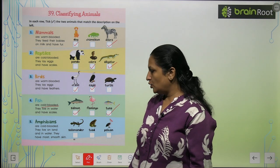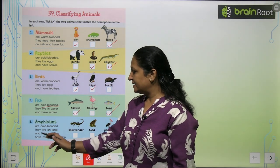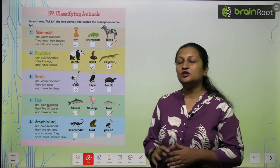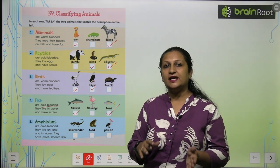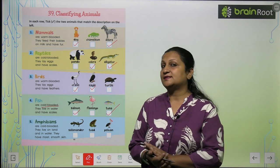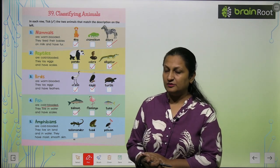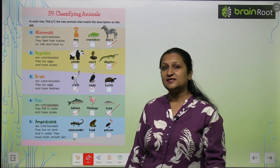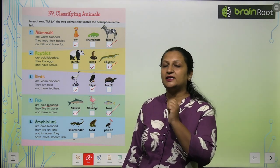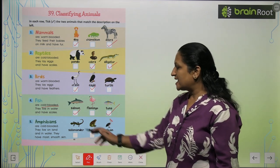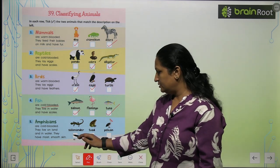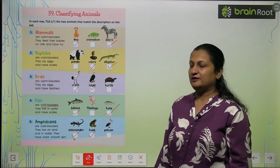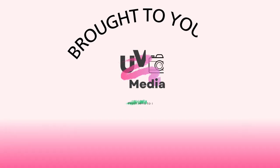Amphibians are cold blooded. They live on land and in water. They have smooth moist skin. So salamander is an amphibian, toad is an amphibian, but pelican is not an amphibian.